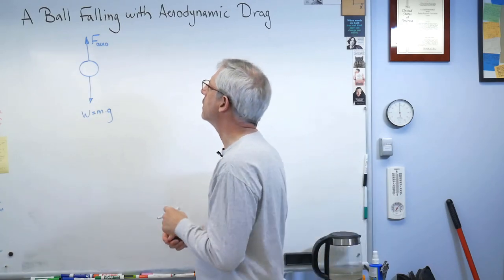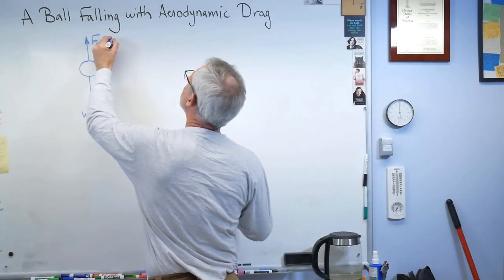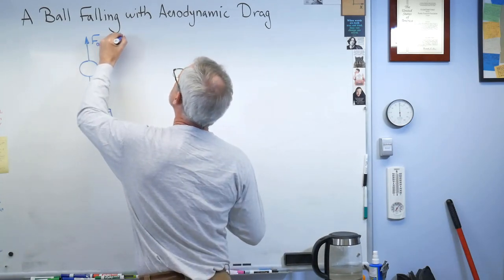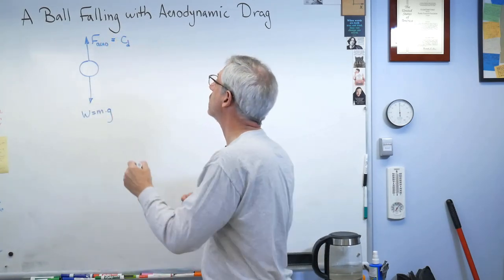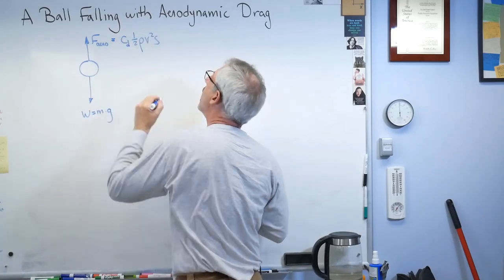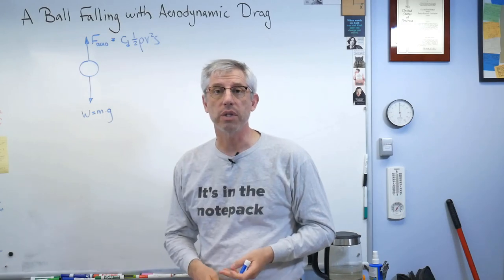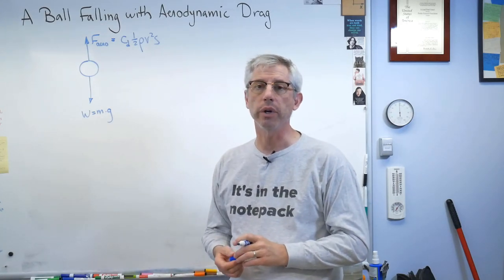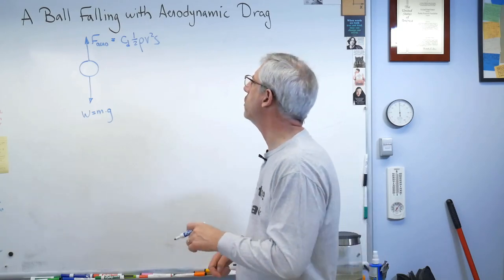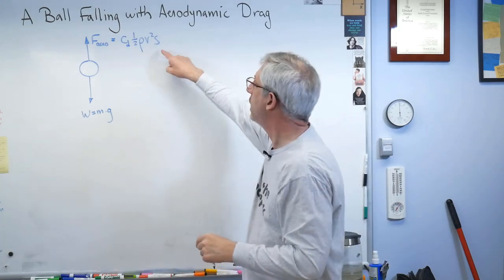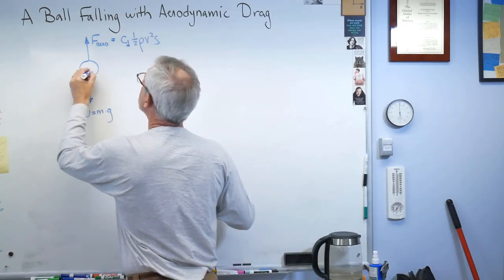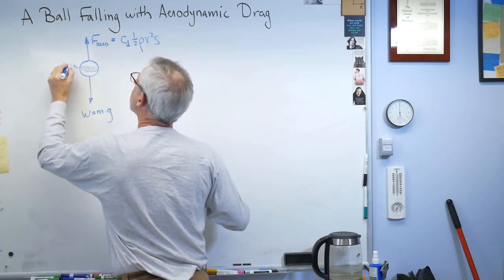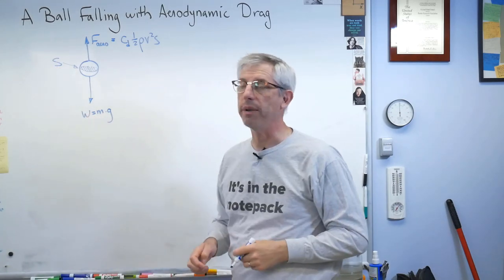And this is my aerodynamic forces. What are the aerodynamic forces? Well, if you ever take a class in fluid mechanics, you'll find out that the aerodynamic force, which is the drag force, the force of the air moving past the ball that tends to slow it down, is cd, which is a non-dimensional drag coefficient, times one-half rho v squared s. So this is pretty straightforward.